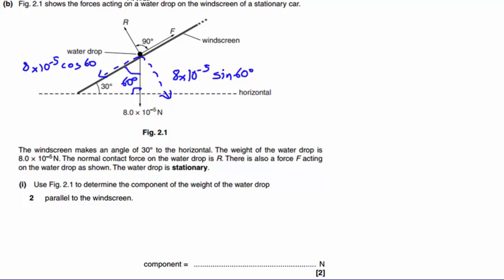Part 2 of this question asks us for the component parallel to the windscreen where we've already said that is 8 times 10 to the minus 5 multiplied by the cosine of 60 which will give us 4.0 times 10 to the minus 5 Newtons.